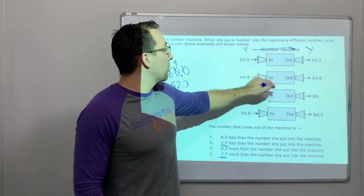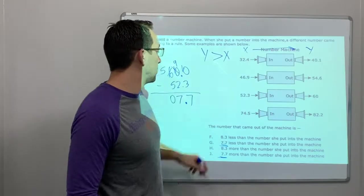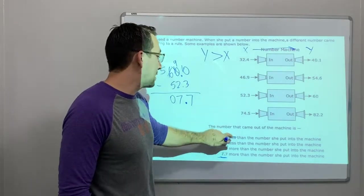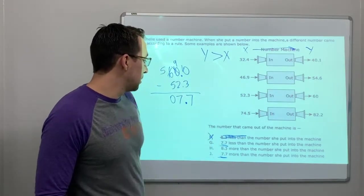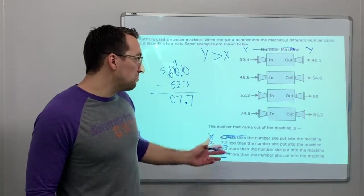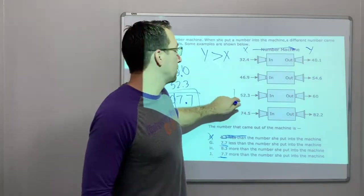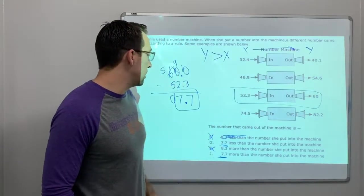8.3 less than the number she put into the machine. Which is bigger? Y is bigger than, y is greater than x. So it's not less than. 8.3 more than the number. Okay. But it's not 8.3 because 7.7 was my answer for this right here. Okay. So it's not H.